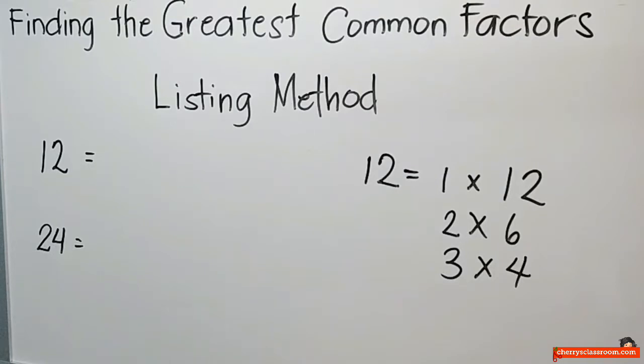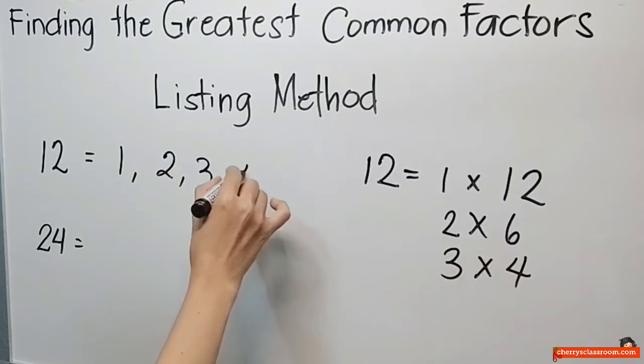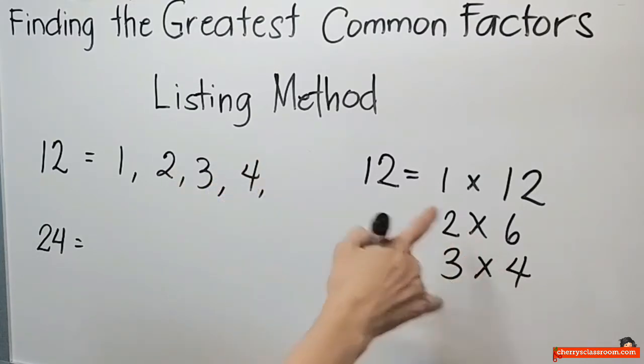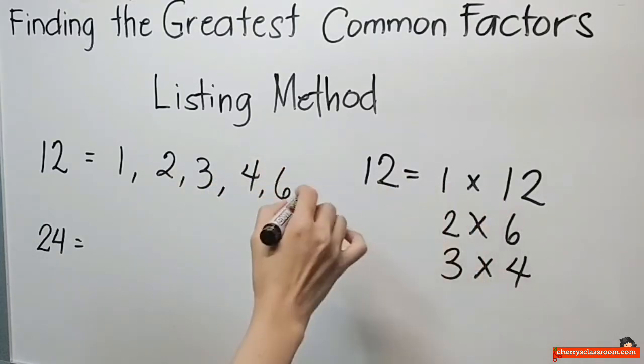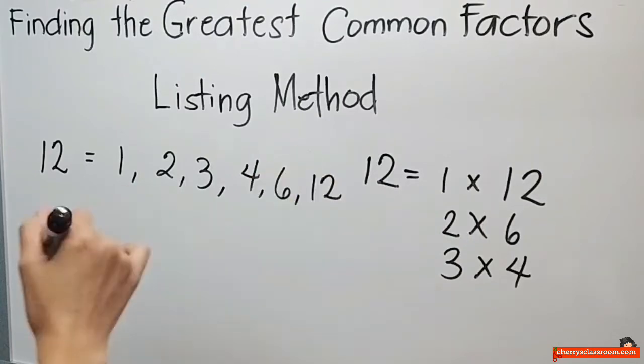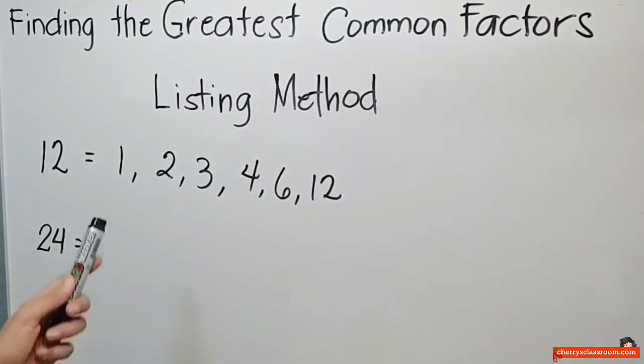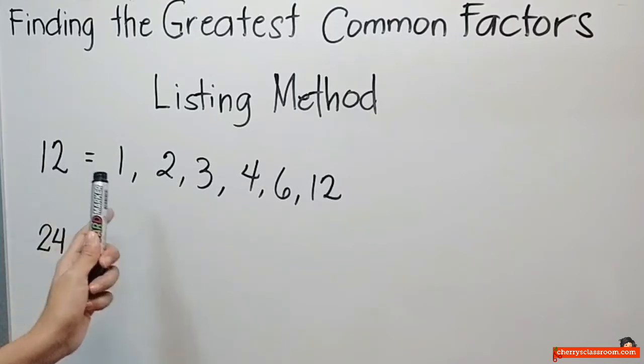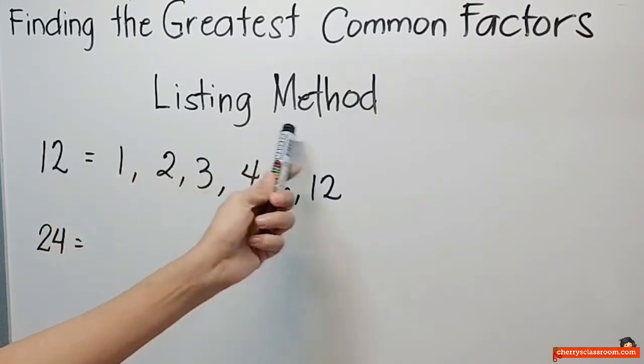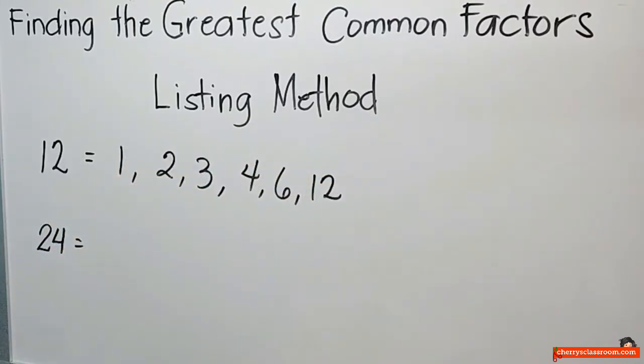Meron pa ba? So kung titingan mo, andito na. So 1, 2, 3, 4, 6, at 12. Nilista ko lang ang lahat ng factors ng 12. Listing method. Nilista ko.